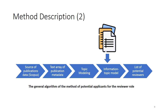The general approach for reviewer finding is presented on this slide. First of all, we need to define the source of publications data — it may be Scopus, Web of Science, or a local database. After this, we extract a text array of publication metadata, apply pre-processing to this data, and feed this information to the topic model algorithm. We then use this model in our informational topic model and, after some stages, receive the final list of potential reviewers.